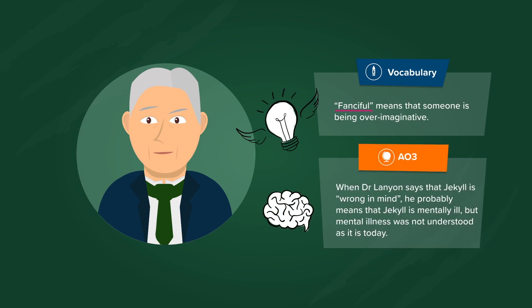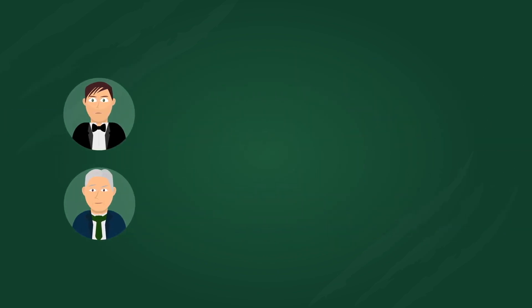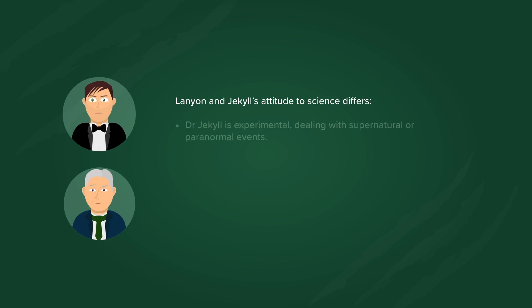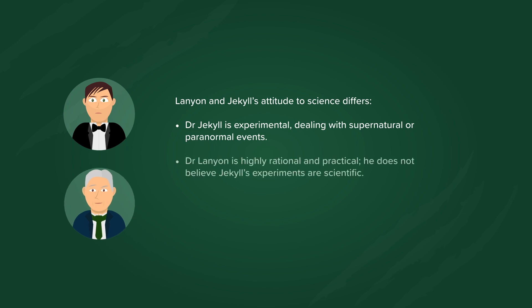When Dr Lanyon says that Jekyll is 'wrong in mind', he probably means that Jekyll is mentally ill, but mental illness was not understood then as it is today. Lanyon and Jekyll's attitudes to science differ: Dr Jekyll is experimental, dealing with supernatural or paranormal events, whereas Dr Lanyon is highly rational and practical. He does not even believe Jekyll's experiments are scientific.